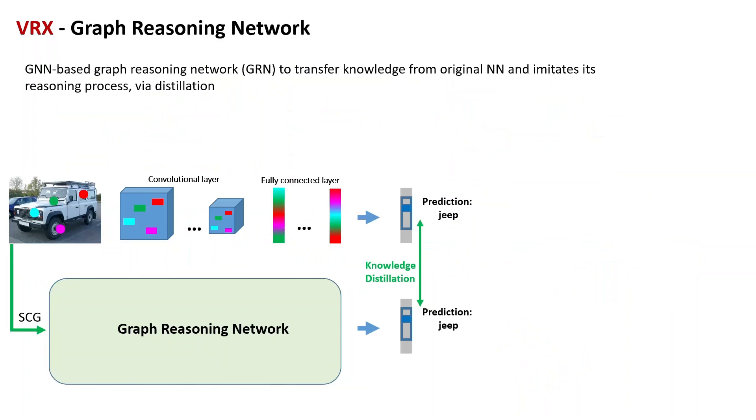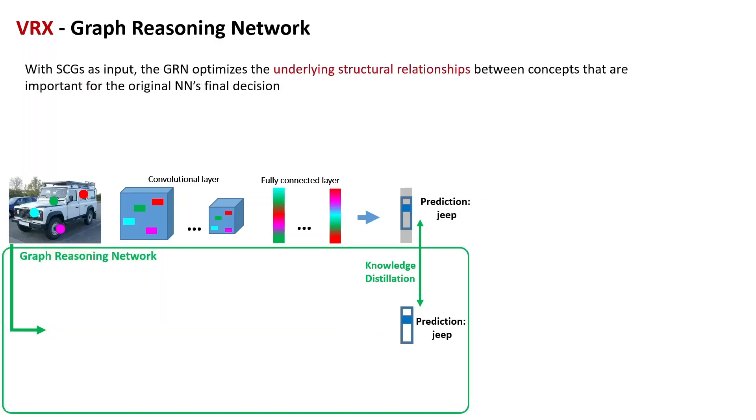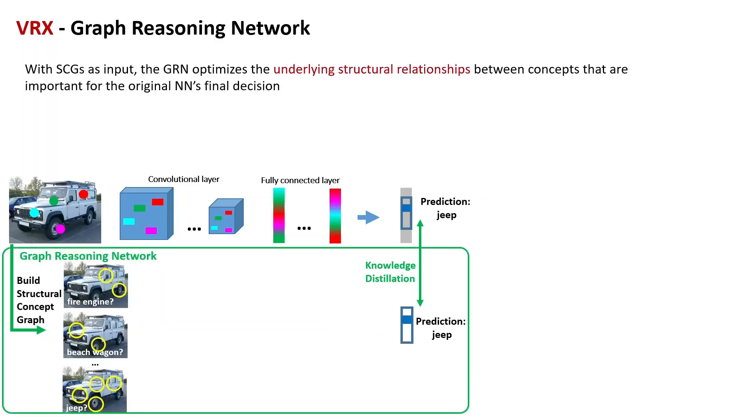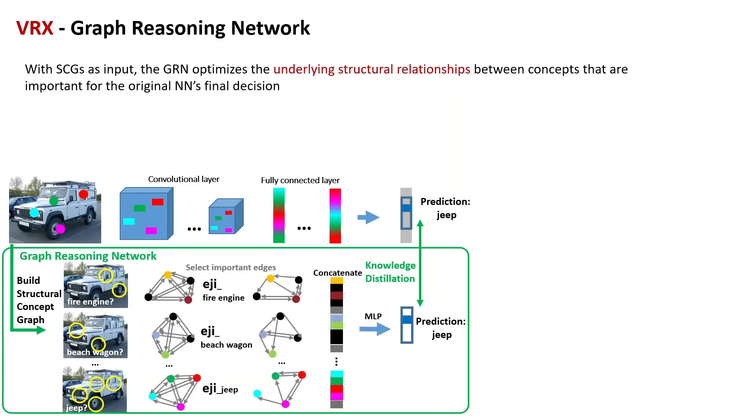To explain the reasoning process with structural concept graph, we propose a GNN-based graph reasoning network to mimic the decision of the original network with knowledge transfer and distillation. Graph reasoning network first builds structural concept graph for each potential class, then helps optimize underlying structural relationships between concepts that are important for the original model's decision. After knowledge transfer, graph reasoning network becomes a representation of the original network.